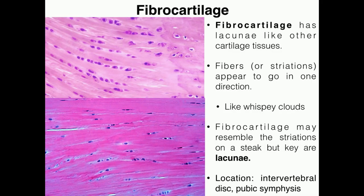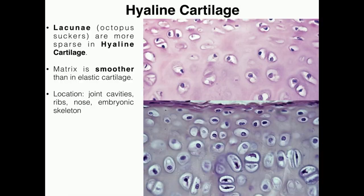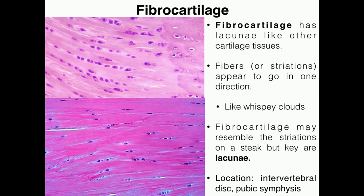The last type of cartilage also has lacunae. They're not as obvious and look a little bit different, but you can still usually tell they're lacunae. Here's an example at the bottom image — you can see a chondrocyte surrounded in a whitish space. All of these things are lacunae. Fibrocartilage's lacunae look a little bit different than they did in hyaline and elastic cartilage.